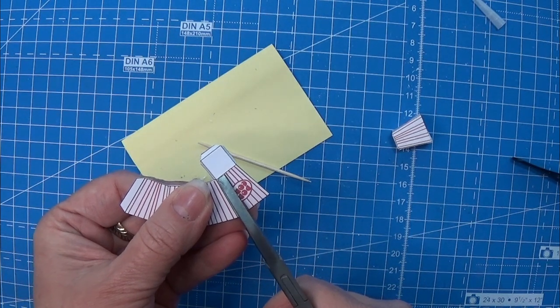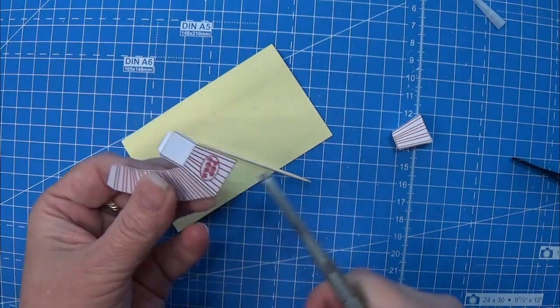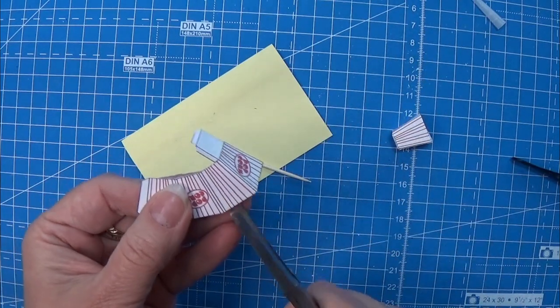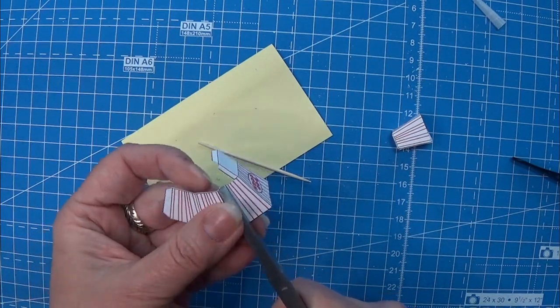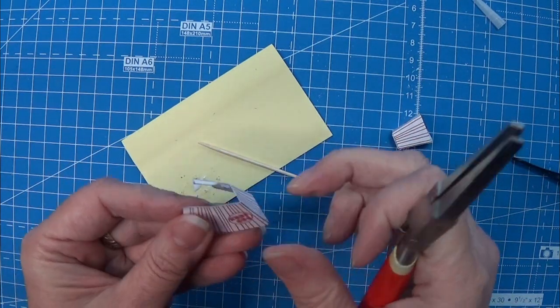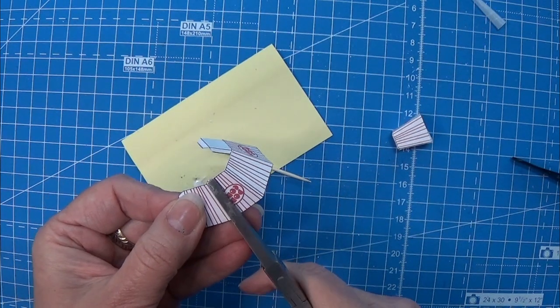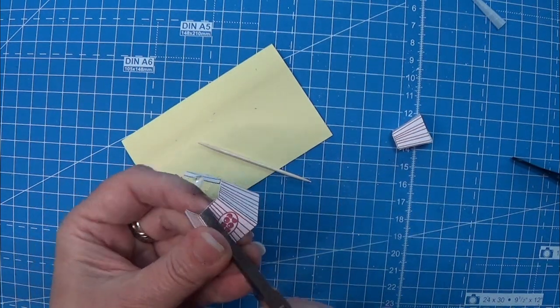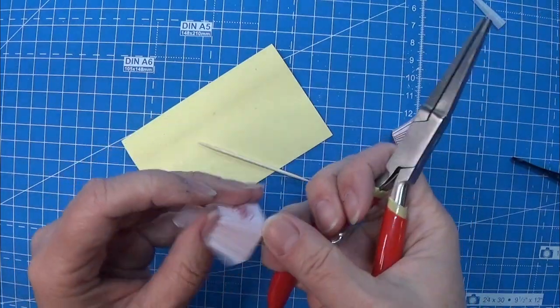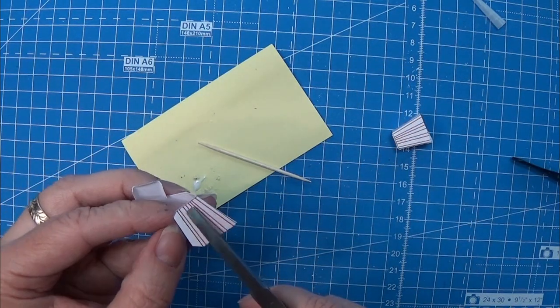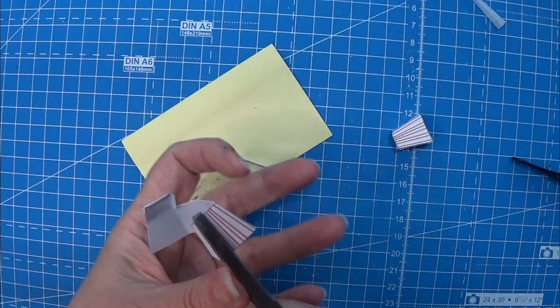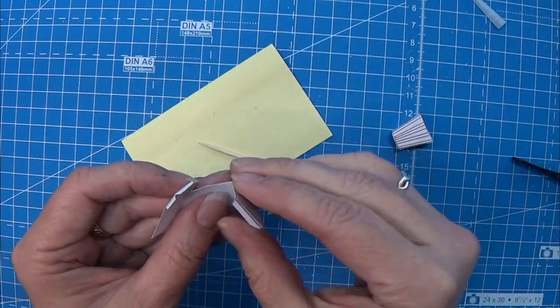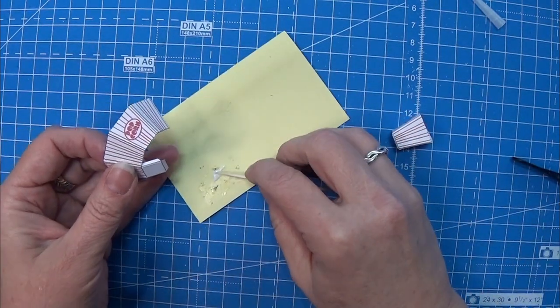If you don't have this tool you can always use one of the legs of a scissor and kind of line the scissor leg up with the line where you want to bend, and then bend it over that. That works very well as well. Or you can always score it with a needle first and then bend it, but that just takes a longer time.